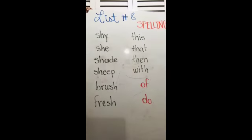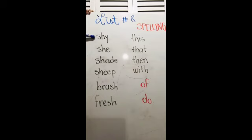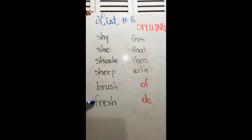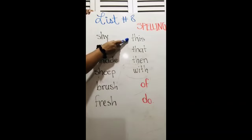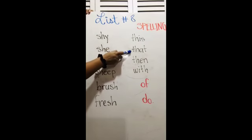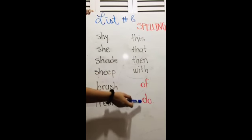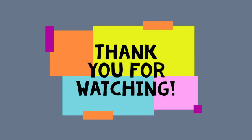So now let's review the words one by one: shy, she, shade, ship, brush, fresh, this, that, then, with, off, do, on, to.